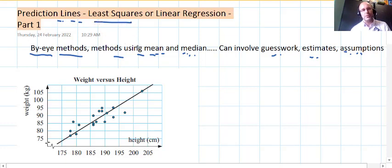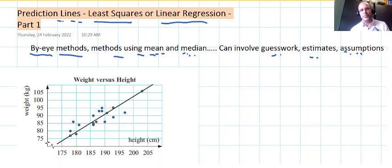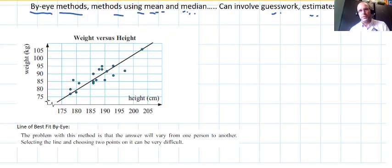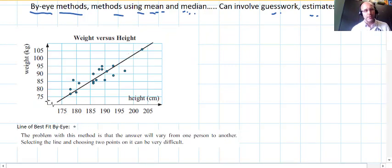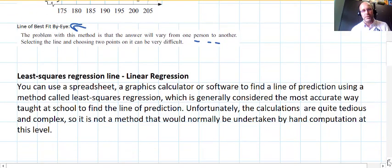Also commonly known as linear regression, because we want a linear model which will help us make predictions that are reliable. To move away from methods that involve the mean or median or lines of best fit is important because the answer will vary from one person to another. There's also precision and accuracy issues, so we need to move towards something that is more robust.